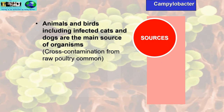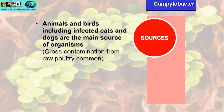Sources of Campylobacter include animals and birds, including infected cats and dogs. Cross-contamination from raw poultry is probably the biggest cause — not so much undercooking of the poultry. People handle poultry packaging and then, without washing their hands, touch food surfaces, fomites, and other things — perhaps touching high-risk foods — causing cross-contamination.